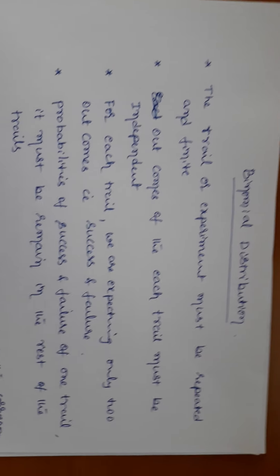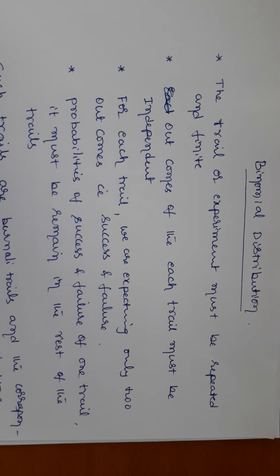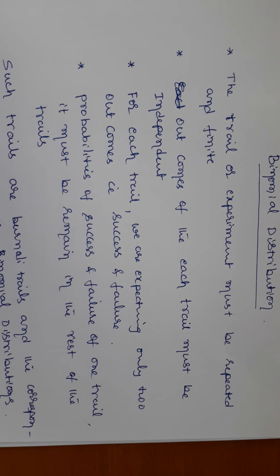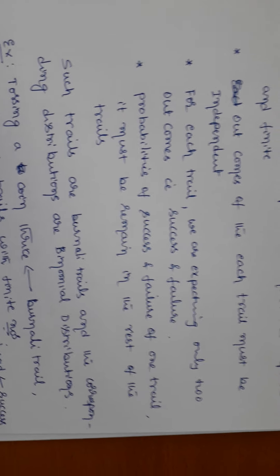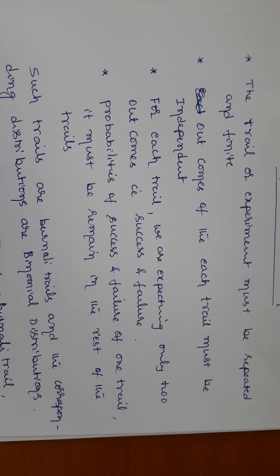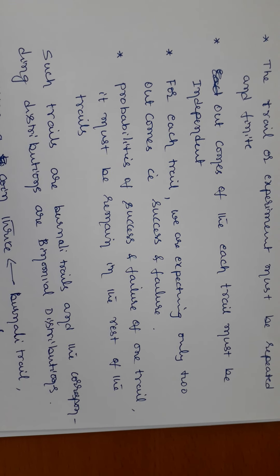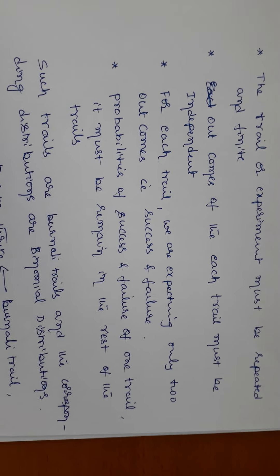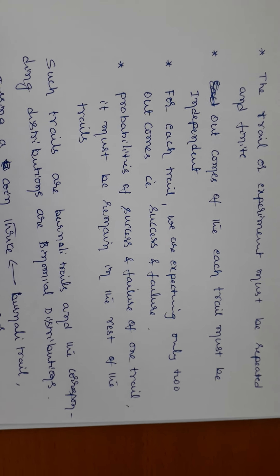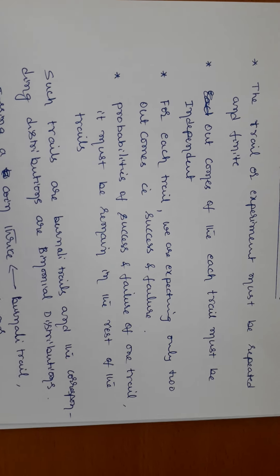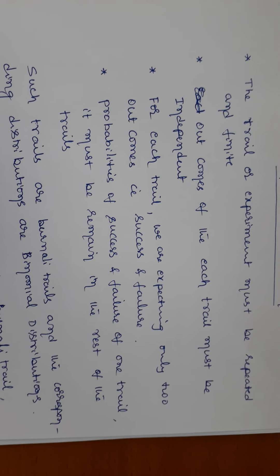Condition four: the probabilities of success and failure found in one trial must remain the same in the rest of the trials. These are the conditions that must be satisfied to go for binomial distribution. If any one of these conditions is violated, we cannot use binomial distribution.